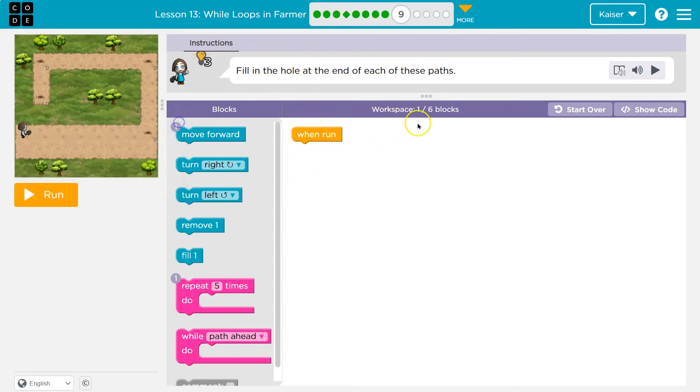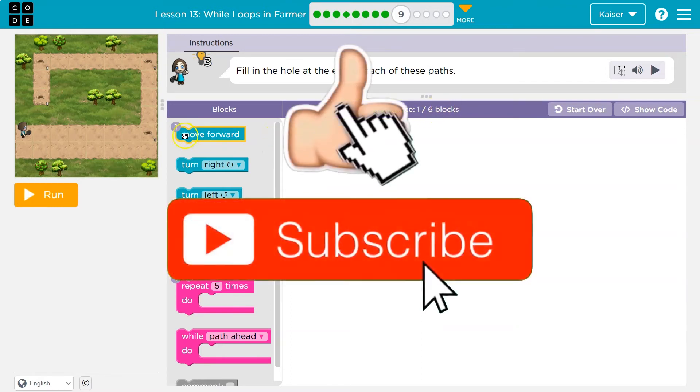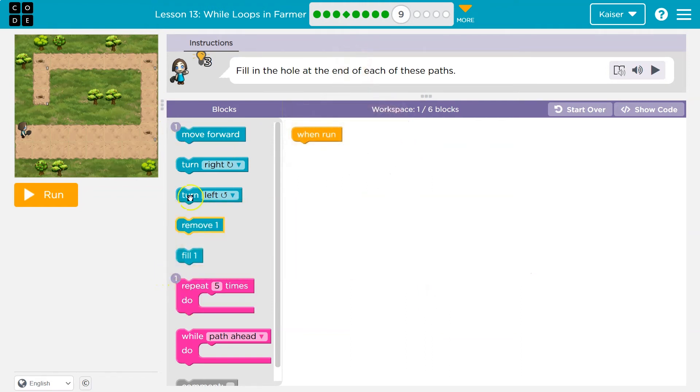So we have one block here, obviously, and we want to use no more than six. Like I always do, I'm going to just start putting stuff down to test. Apparently, they only want us to use one move forward and one repeat. So I wonder how many times. I'm going to break those rules because you can be wrong with coding all you want. Let's test some junk out.